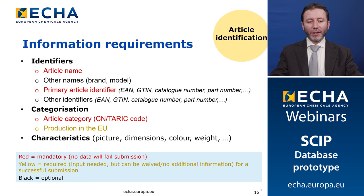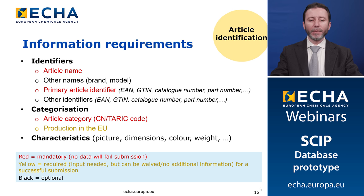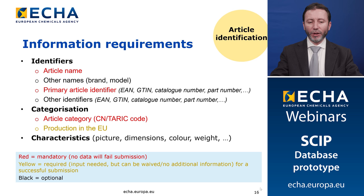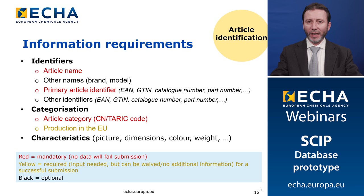Going into more detail on the information requirements regarding the identification of articles, we divide these into identifiers — the article name, other names such as the brand and model — and primary article identifiers, which are alphanumeric identifiers that unequivocally identify the article. You can also provide other identifiers that you assign to your article or product placed on the market. The categorization includes the article category, which describes your article based on its function and use, based on a harmonized list.